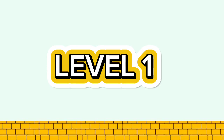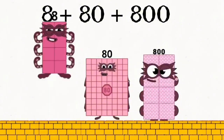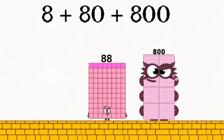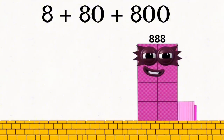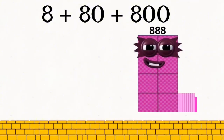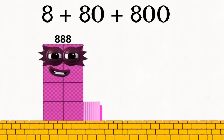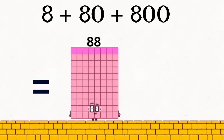Level 1. 8 plus 80 equals 88. 88 plus 800 equals 888. Summary of the sums: 88 and 888.